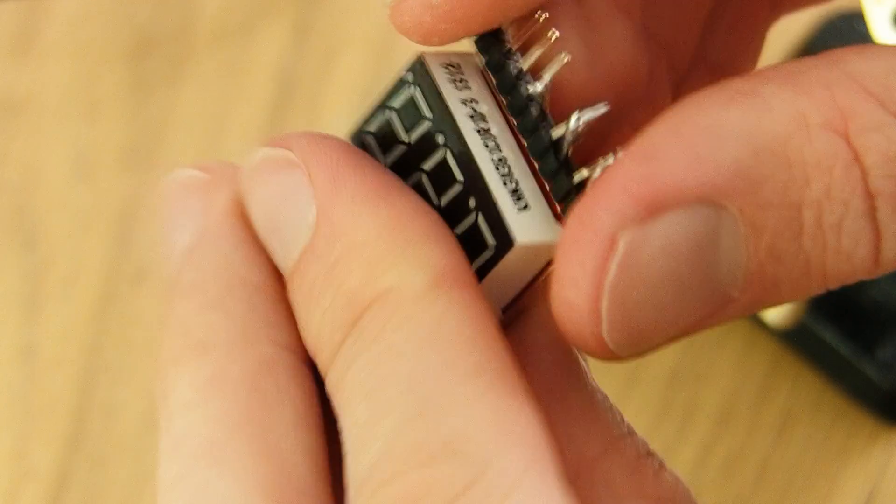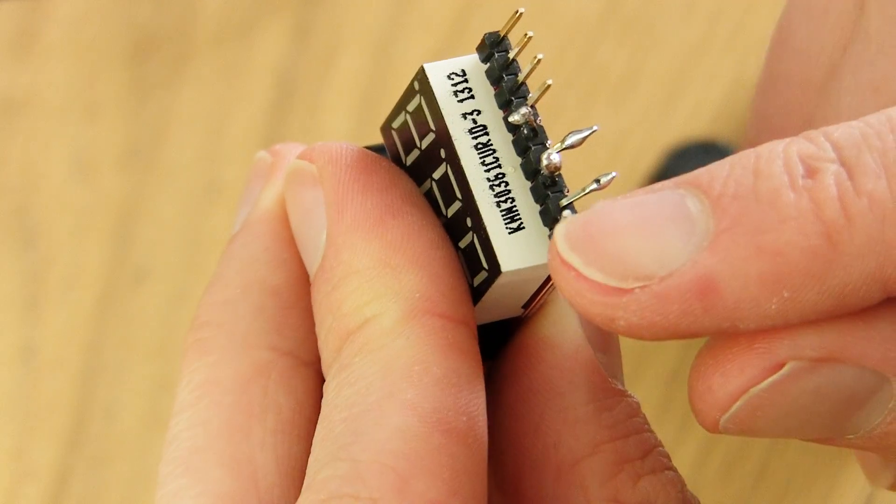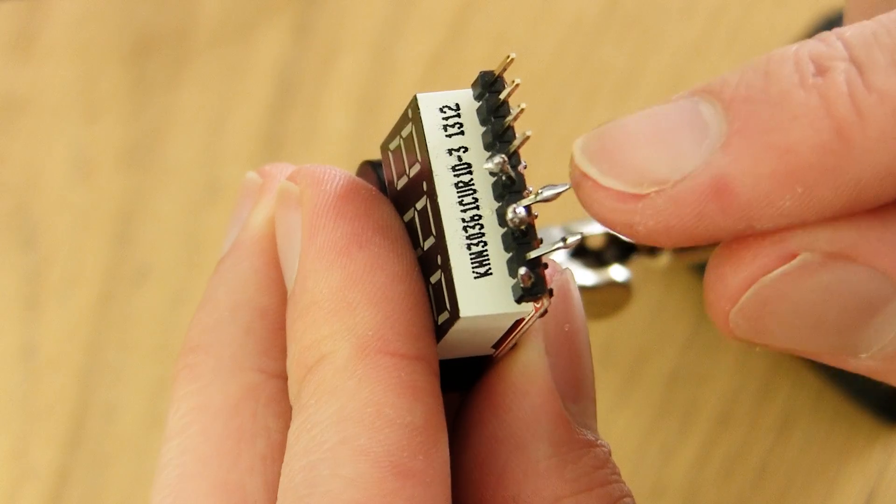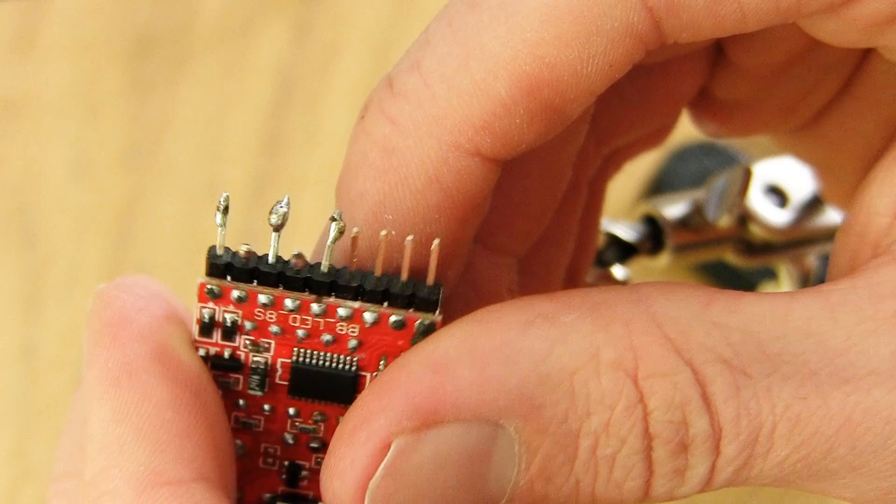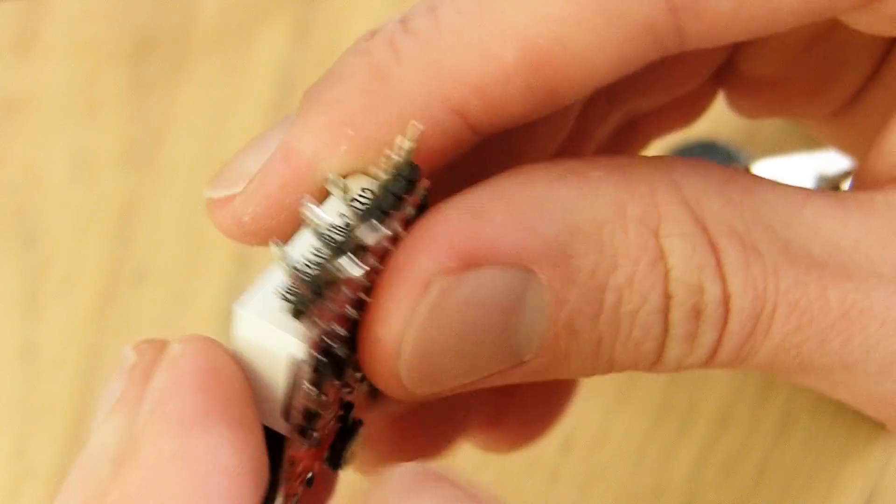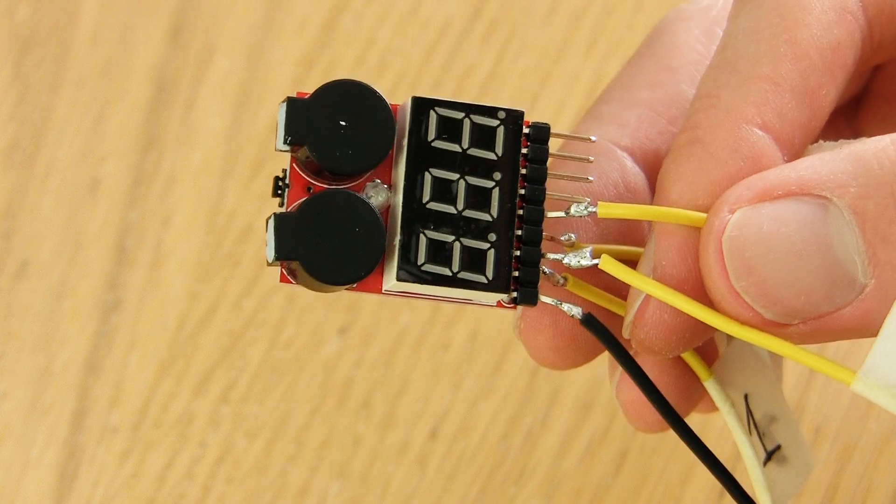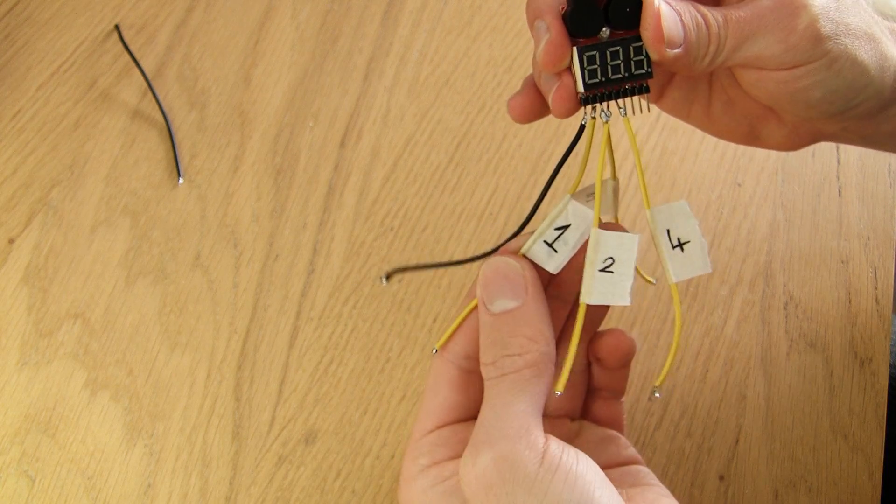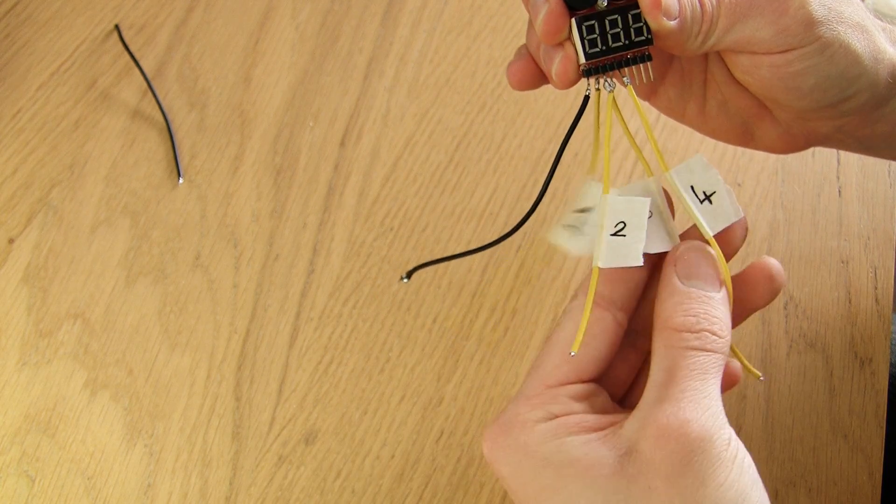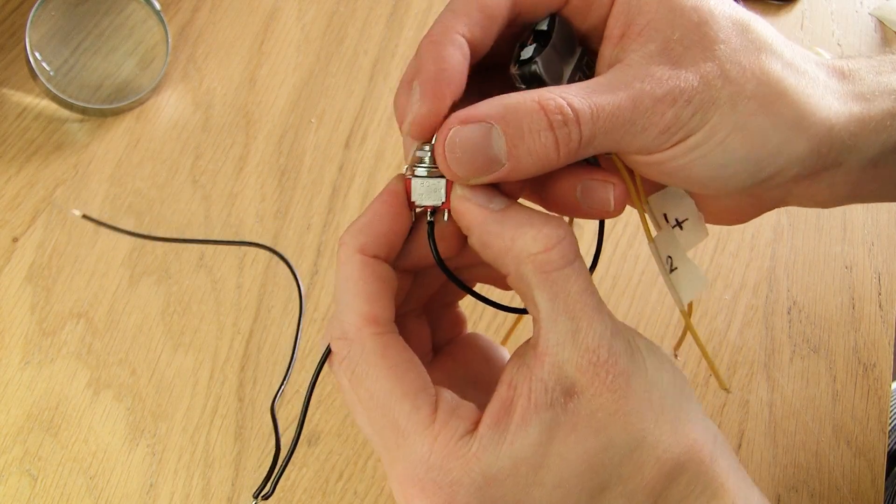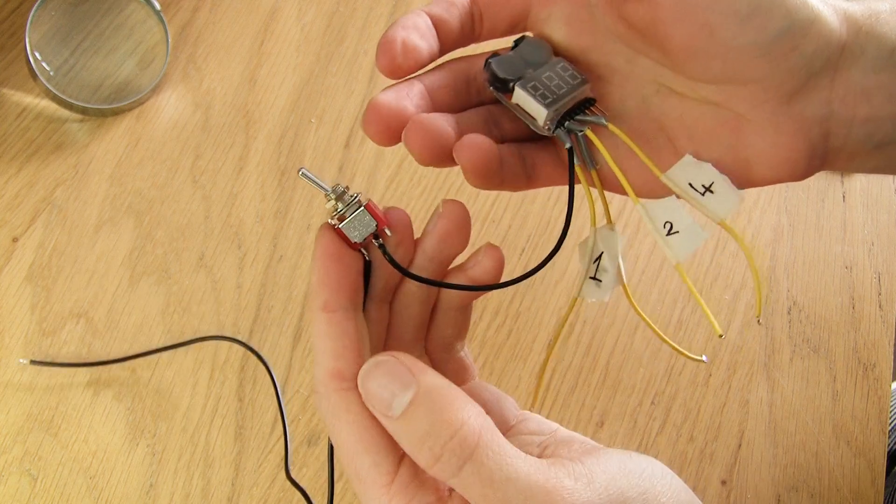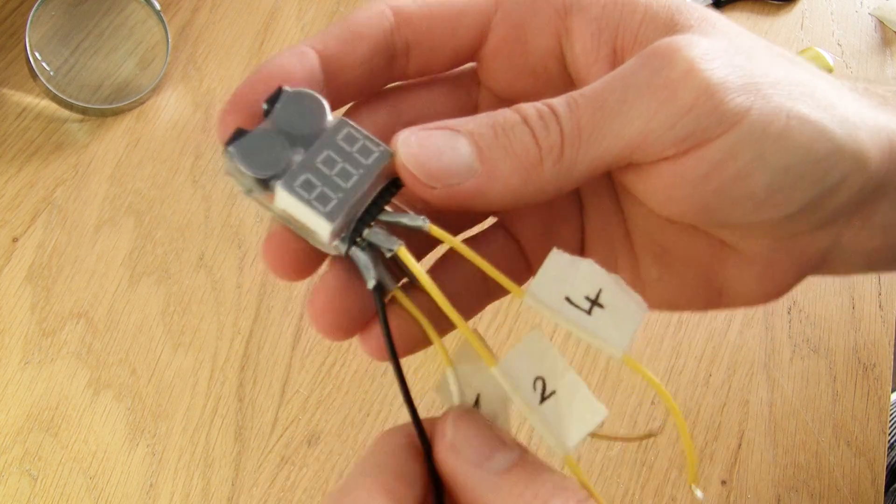What we want to do is add solder to the first five of the contacts assuming you're going to be using four batteries. The one on the far left is the ground and the subsequent ones are positive. Now we'll add some wires and label them and we'll add a switch on the ground so that we can turn the whole thing on and off. Adding some tape to prevent shorts would probably be a good idea.